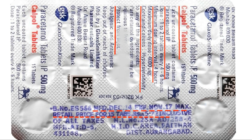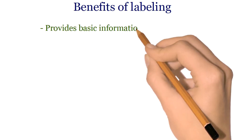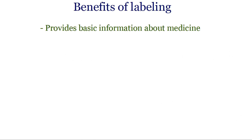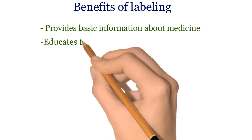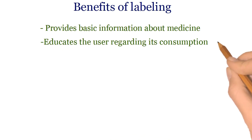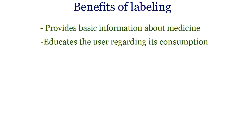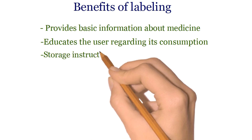Labeling is useful in many ways. It provides basic information such as the name of the medicine, manufacture date, expiry date, and address of the manufacturer and ingredients. It also educates the user regarding its consumption — such as how to take the medicine, whether it should be swallowed or chewed — and instructs about how to store the medicine.